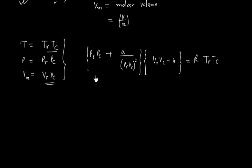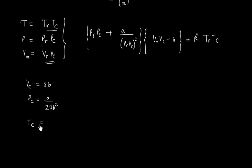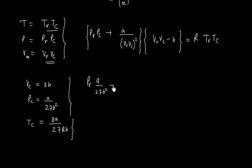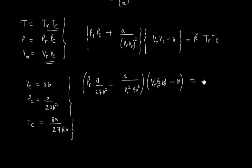Now we can plug in the values of the critical constants. Recall that critical volume VC equals 3B, where B is the Van der Waal constant. Similarly, critical pressure PC equals A/(27B²), and critical temperature TC equals 8A/(27RB). Substituting these, we get PR·(A/27B²) + A/(VR²·9B²) times (VR·3B - B) equals R·TR·(8A/27RB).